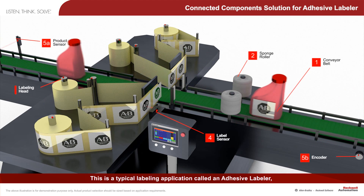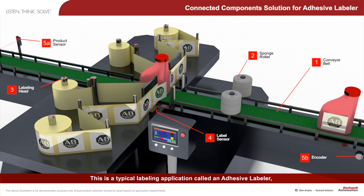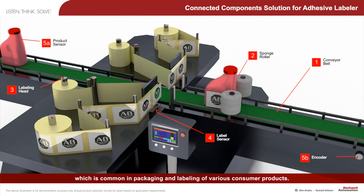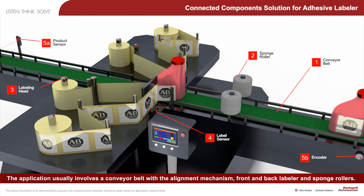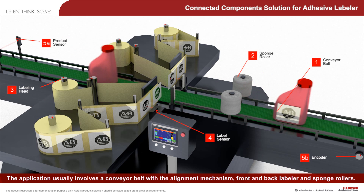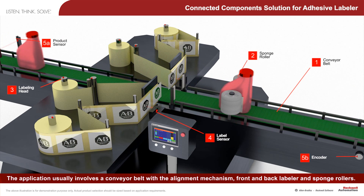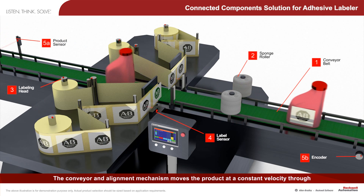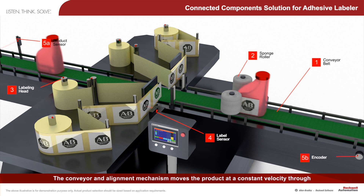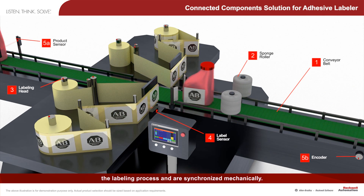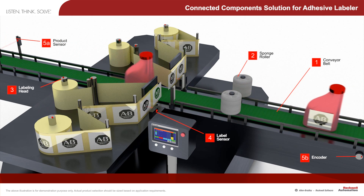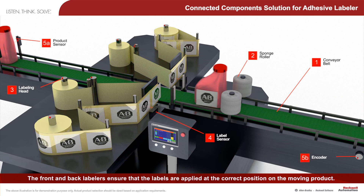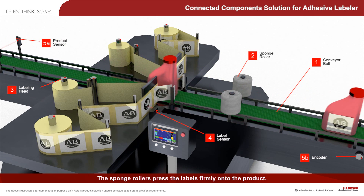This is a typical labeling application called an adhesive labeler, which is common in packaging and labeling of various consumer products. The application usually involves a conveyor belt with an alignment mechanism, front and back labelers, and sponge rollers. The conveyor and alignment mechanism move the product at a constant velocity through the labeling process and are synchronized mechanically. The front and back labelers ensure that labels are applied at the correct position on the moving product.